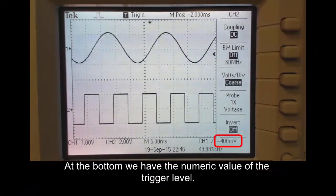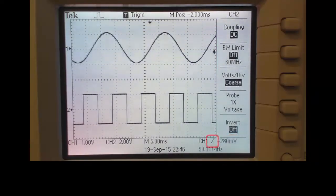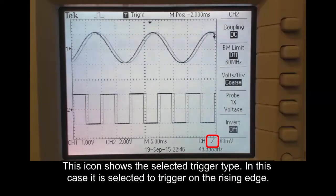At the bottom we have the numerical value of the trigger level. This icon shows the selected trigger type.